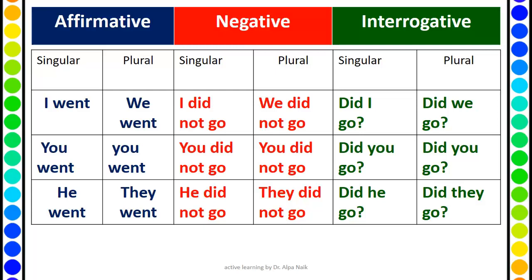Now how to make questions? If you know 'I did not go', the question starts from 'did': Did I go? Did we go? Did you go? Did he go? Did they go? Remember, 'did' is very important for making questions as well as for negative sentences.